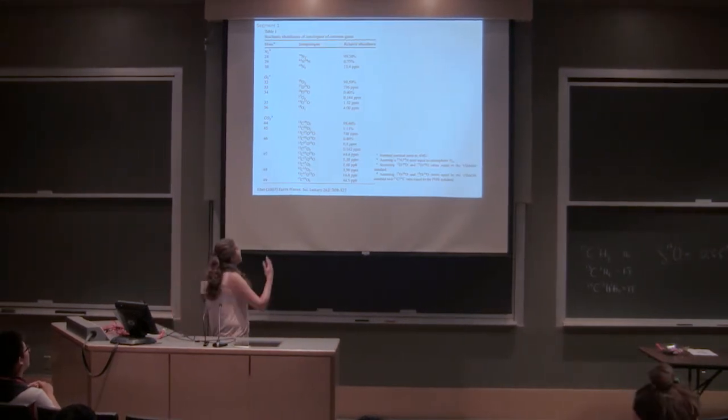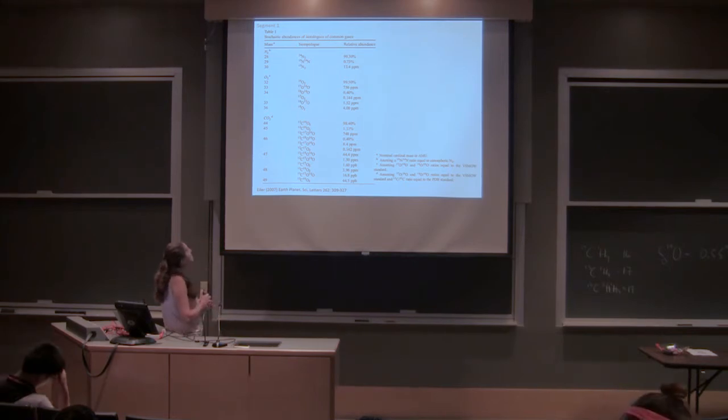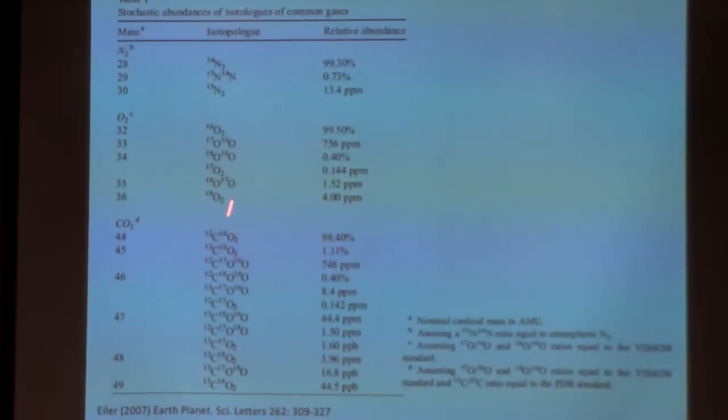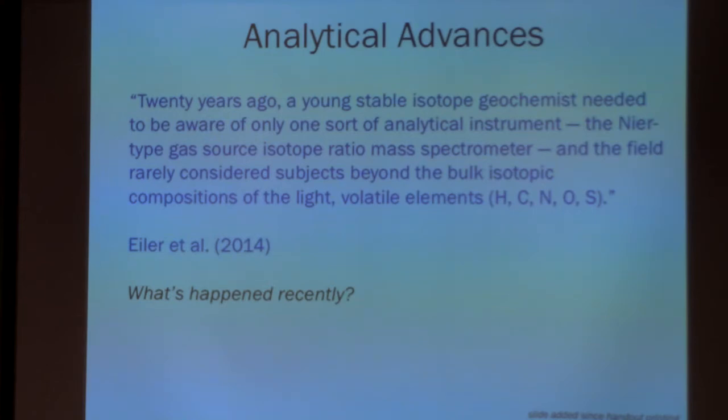All right. So there's lots of different lists up here in terms of this is just for N2, O2, CO2, in terms of different isotopologues of common gases and their abundances. And this is from ILR 2007. There's another review paper that I'll reference a lot by Eiler and Farquhar that also has a good sort of list of them so you can see the abundances. Okay. So this is from this ILR et al. 2014 review paper.